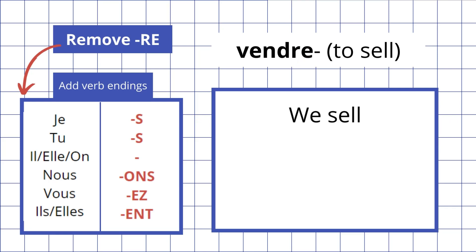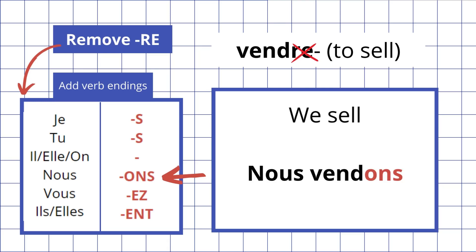We sell: we do the same thing — remove the RE, then add the correct verb ending. We is nous, so we use the ONS ending. So we sell: nous vendons.